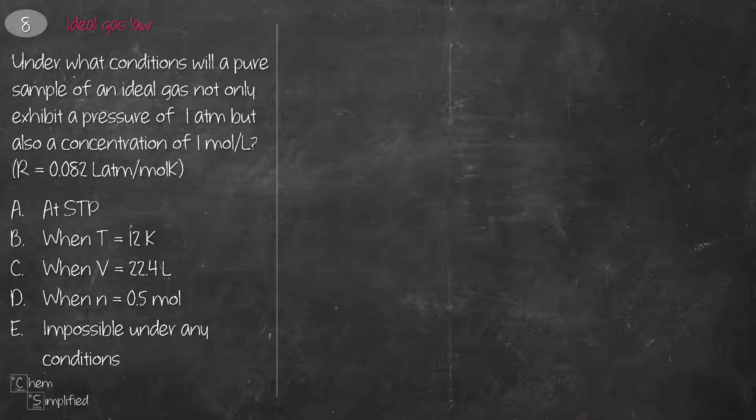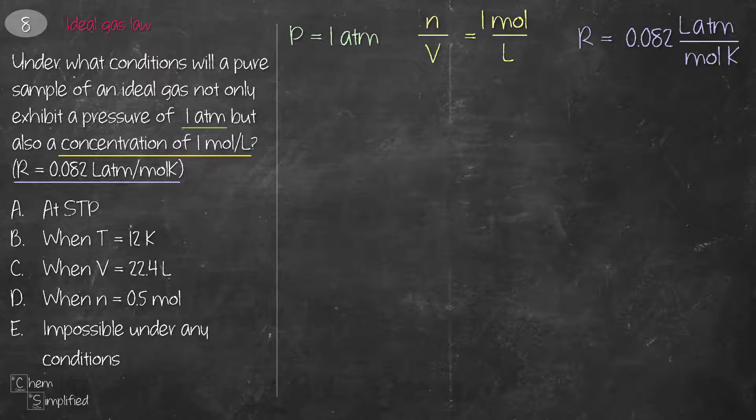This next question is on ideal gas law. We're given the pressure, which is 1 atm, and then we're also told the concentration of 1 mole per liter. Concentration is mole over volume, and we're also given the gas constant, which is 0.082. Since this question involves ideal gas, we're going to pull out the formula, which is PV equals nRT.